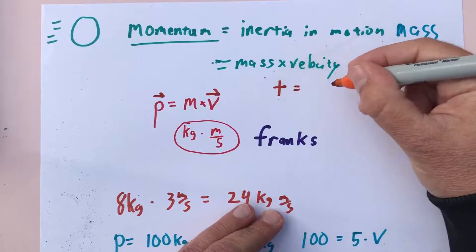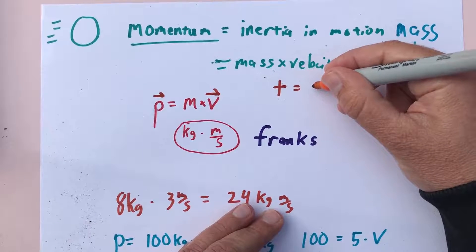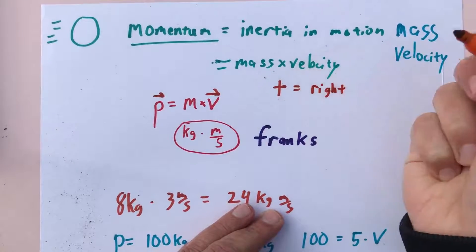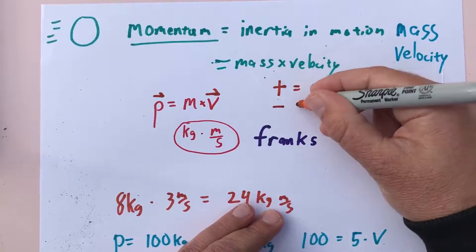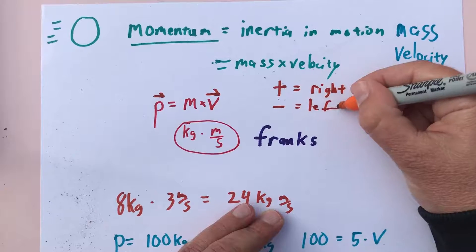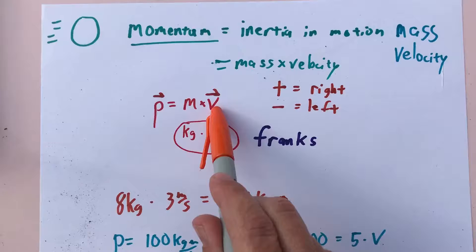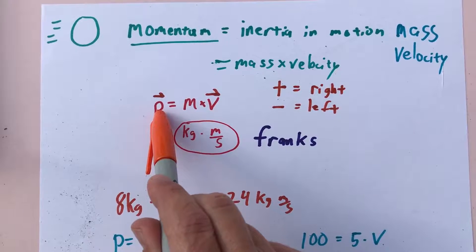But now just like it used to be, positive momentum will mean to the right or whatever we designate to be a positive direction, and negative momentum will be to the left or whatever we designate to be a negative direction. Whatever the direction of the velocity is, that's the direction of momentum. And that makes sense: if this ball is moving to the right, it wants to stay moving, but it wants to stay moving to the right.